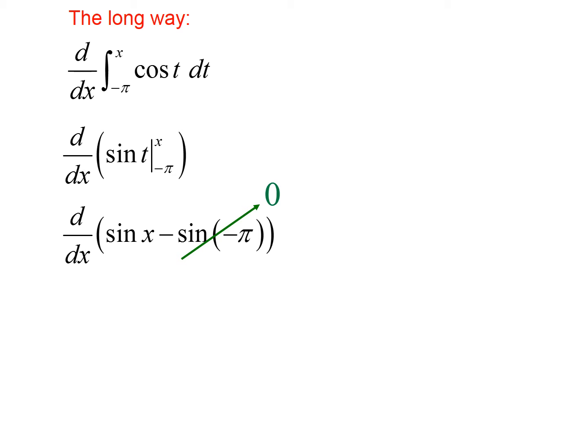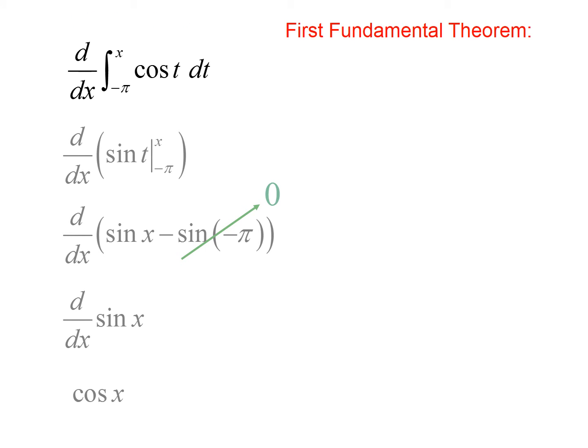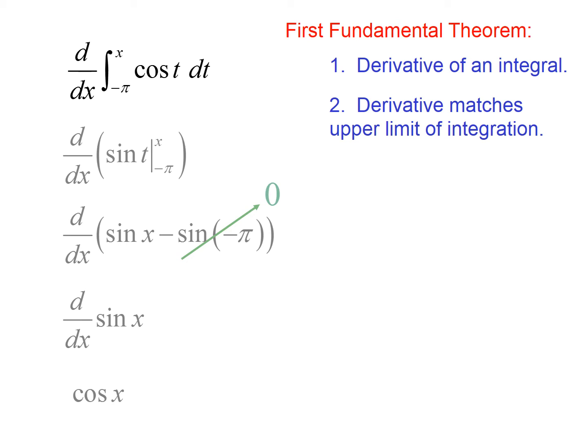The derivative of a constant sine of negative pi is zero. So I am left with cosine x, which is the fundamental theorem of calculus. So if I had used the fundamental theorem of calculus, I would have taken the derivative of an integral. The derivative matches the upper limit of integration, and the lower limit of integration is a constant. So I don't want you to do this the long way. I want you to always do it using the fundamental theorem of calculus.